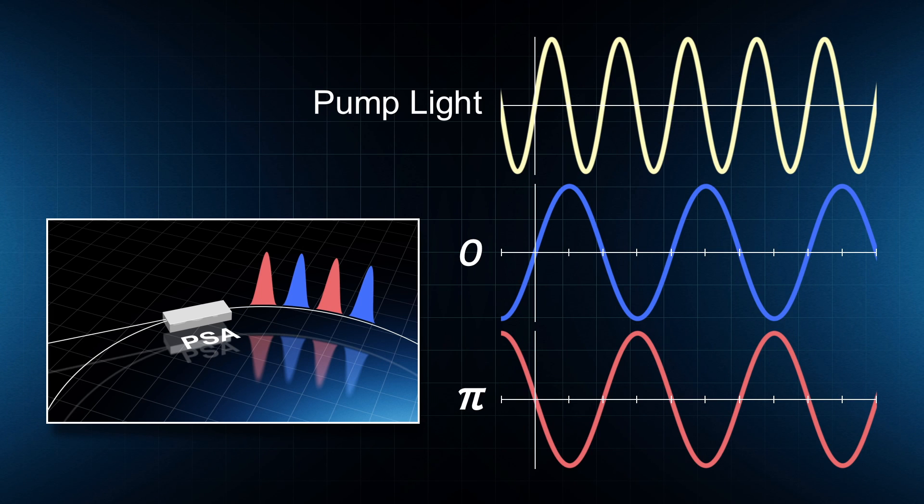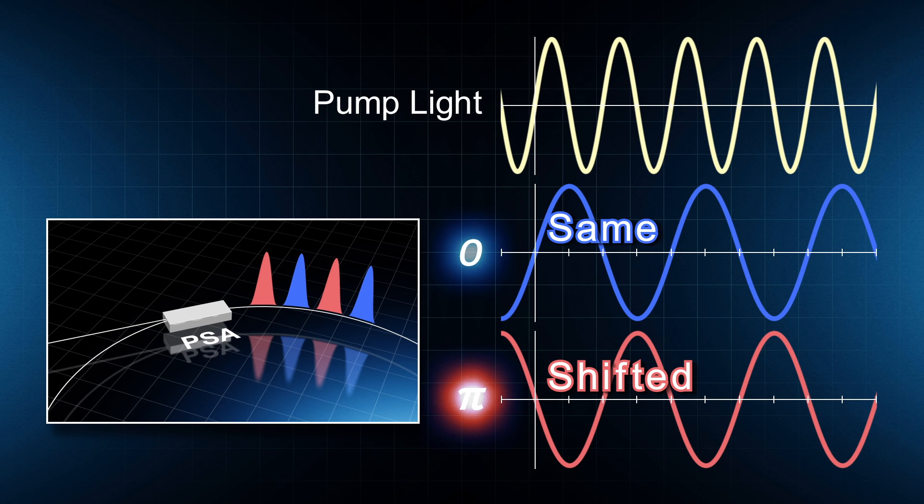The PSA most efficiently amplifies lights with phases zero or pi relative to the pump phase. Here we refer to the light with the same phase as zero and the phase shifted light as pi.